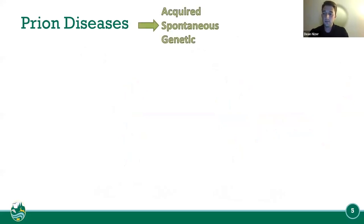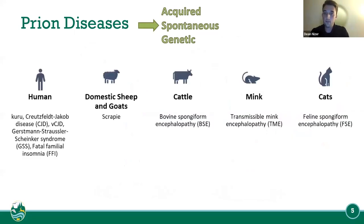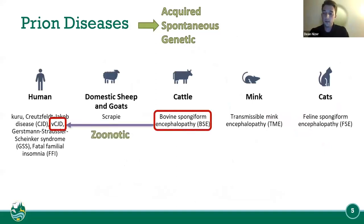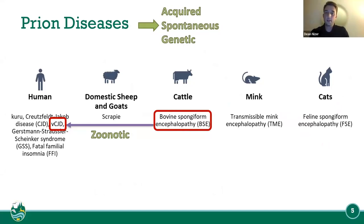Prion diseases can be acquired, spontaneous, and genetic. Some acquired forms are Kuru and variant CJD. Spontaneous could be CJD as well. Genetic forms include GSS and FFI. Something to highlight here is that BSE is zoonotic and it is causing variant CJD.